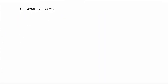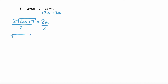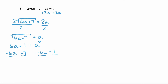Let's look at another example. We need to isolate our radical. We have a negative 2a, so let's add 2a to both sides. That gives us 2 times the square root of 6a plus 7 equals 2a. That radical isn't isolated yet because we have 2 on the outside, so we need to divide both sides by 2. We have the square root of 6a plus 7 equals a. Square both sides — the left side gives the radicand, 6a plus 7, and the right side gives a squared. Let's move everything to the right-hand side: subtract 6a and subtract 7, giving us 0 equals a squared minus 6a minus 7.